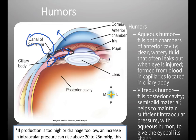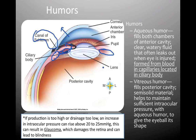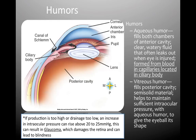The vitreous humor is what we find in the posterior cavity, which is the area behind the ciliary body. The liquid there is more semi-solid and helps maintain intraocular pressure. Glaucoma results from high intraocular pressure — if the pressure within these chambers is too high, it can damage the retina. If the pressure rises above 20 to 25 millimeters of mercury, it's too high, and it can eventually cause damage and blindness if left untreated. This is why an air-puff test is done when getting fitted for contacts.